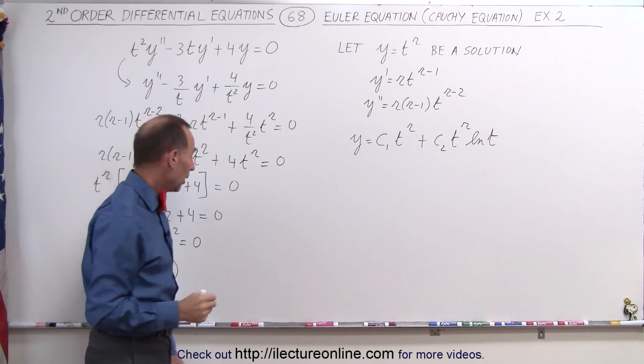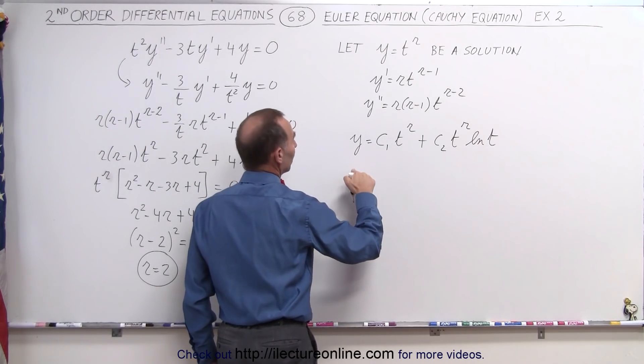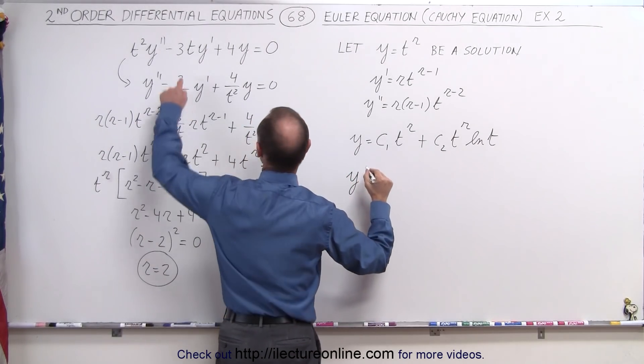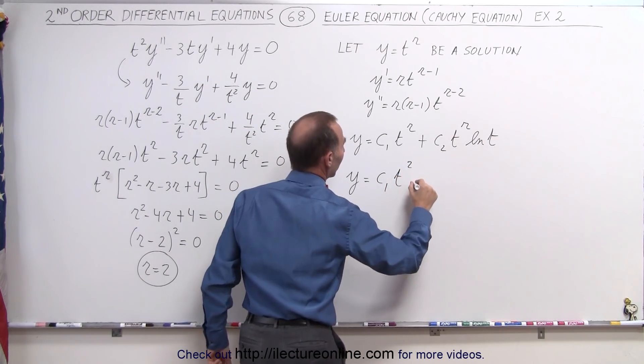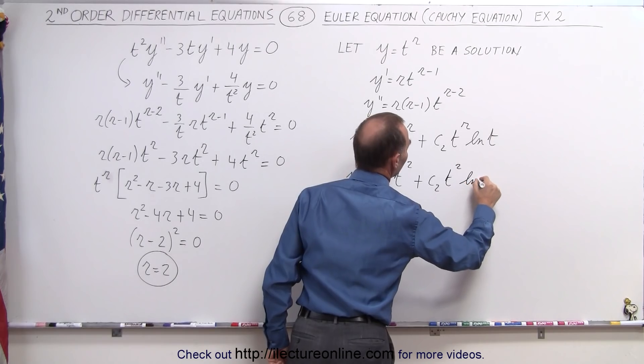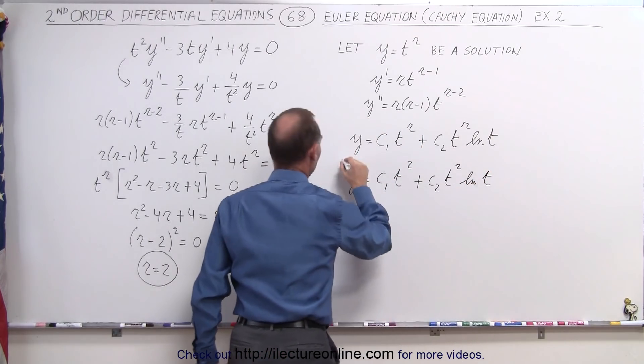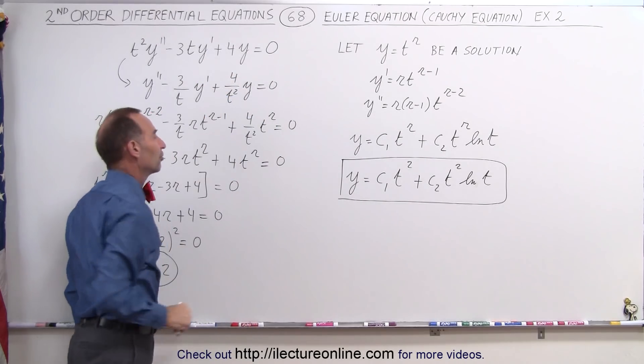All we have to do now is substitute r = 2 into our general equation. The solution to this problem is y = c₁t² + c₂t²ln(t). That's the general solution to our original differential equation.